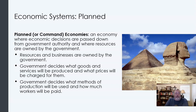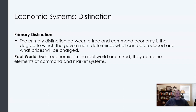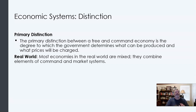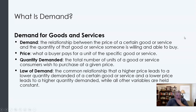One of the reasons planned economies don't work very well is because they're inefficient. It's hard for governments to know exactly how much to produce and when — this is why under many communist leaders in China and Russia, a lot of people starved to death. The primary distinction between free and command economies is the degree to which the government determines what can be produced and what prices will be charged. Most economies in the real world are mixed — they combine elements of both. Think of it as a spectrum with free on one end and command on the other.